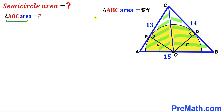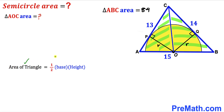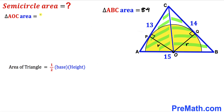We calculate the area of triangle AOC using the formula: area equals one-half times base times height. For triangle AOC, the base is 13 and the height is radius r. So the area of triangle AOC equals one-half times 13 times r, which simplifies to 13r divided by 2.